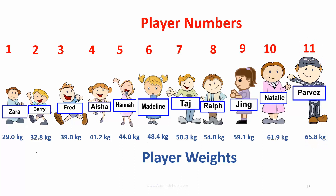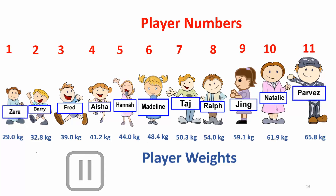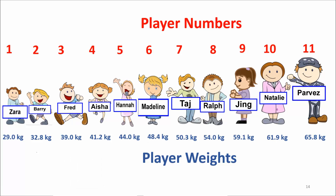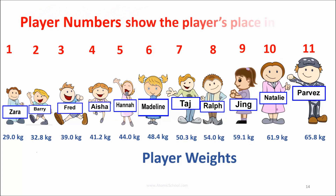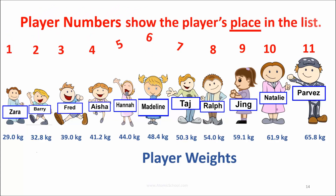How are they different? Notice that the player numbers are always whole numbers, because they show the player's place in the list. You can come second or third in a list, but can you come second and a half?